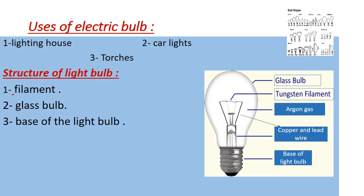First, the light bulb. Thomas Edison is an American inventor who invented the light bulb. The light bulbs are the most popular source of artificial light. They are used in house lighting, car lights and torches. What's the structure of the light bulb? It consists of three main parts: filament, glass bulb, and base of the light bulb.